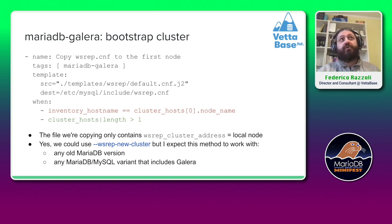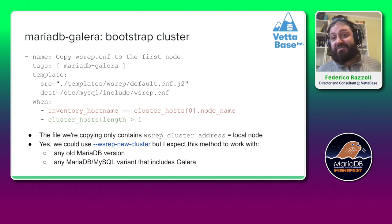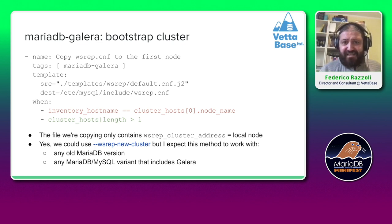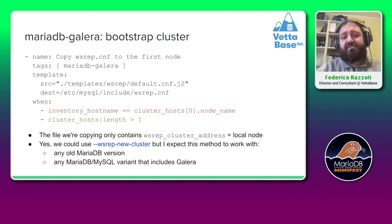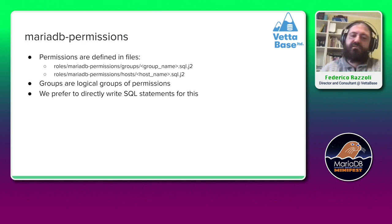This check for the first node can also be useful in different situations — for example when we want to restore a backup. If we want to restore, we want to do it only on the first node, not on all nodes, otherwise we will try to restore three copies of the backup, which doesn't make sense.